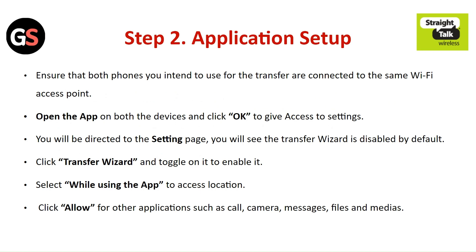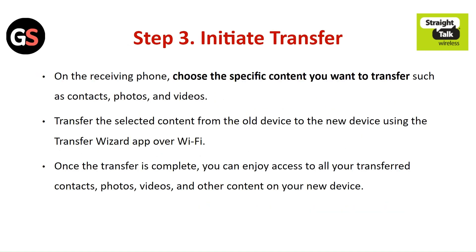Step 2: Application setup. Ensure that both phones you intend to use for the transfer are connected to the same Wi-Fi access point. Open the app on both devices and click OK to give access to the settings. You will be directed to the settings page where the Transfer Wizard is disabled by default — tap on it to enable it. Select 'While using the app' to access location, and click Allow for other applications such as calls, camera, messages, files, and media.